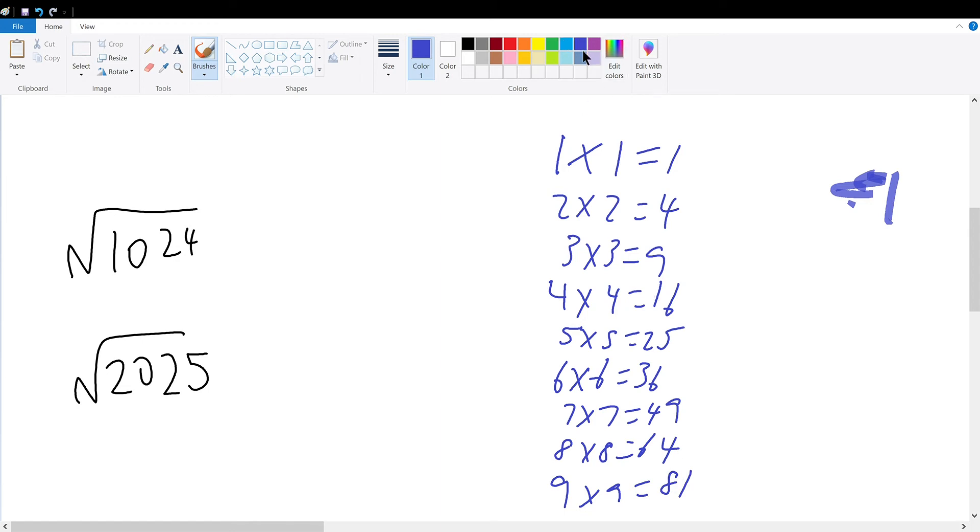So with these properties basically memorized, you can find out the square root really quickly. So how do you solve this is that you look at the last digit. Square root of 1024.